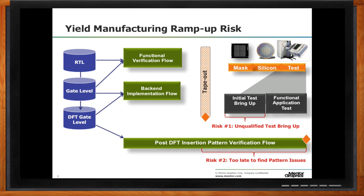That's what happens. If there is an initial test bring-up problem — basic scan chain integrity, basic vector scanning in and out not being correct — then you find that very late in the cycle. After mask, after silicon, after test being done, it costs a lot of money and is extremely difficult to debug at that stage. So that's a huge risk. That's what we call manufacturing ramp-up risk.